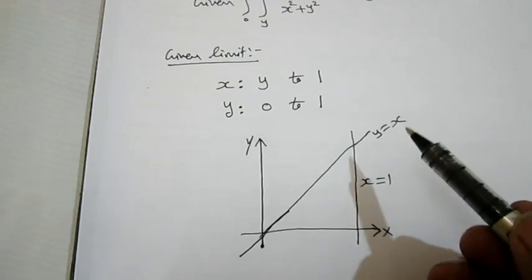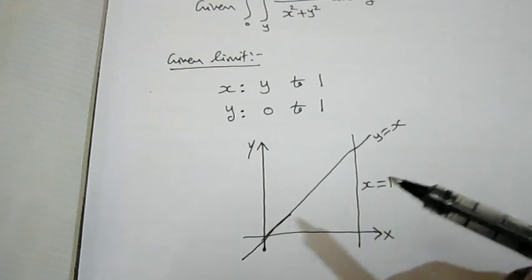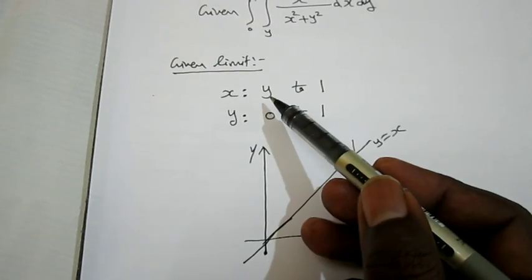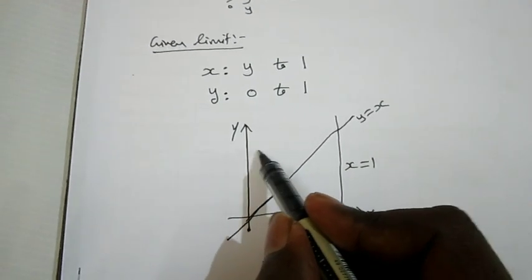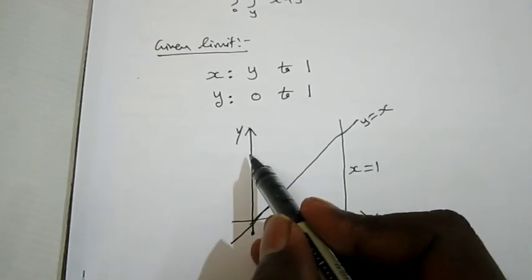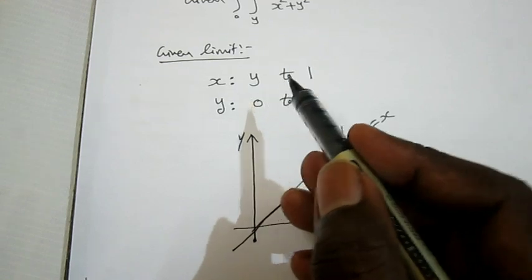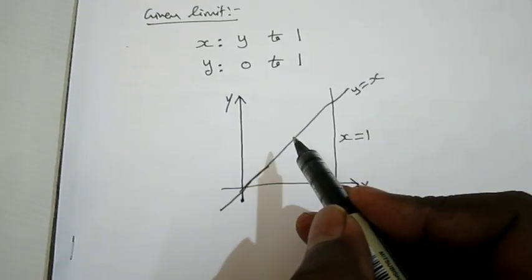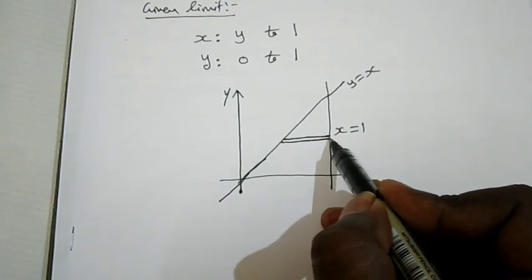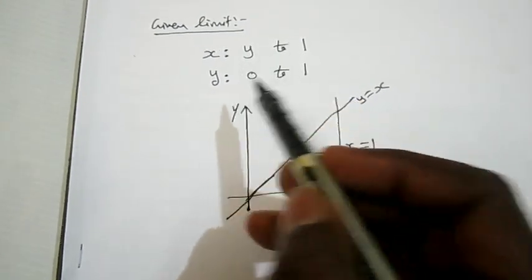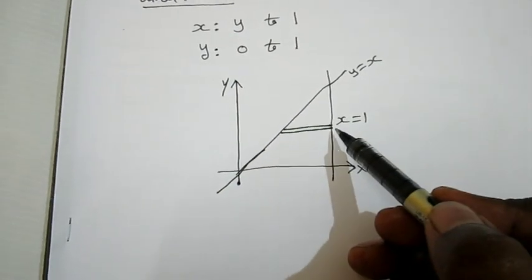Now I am going to draw the strip. Since x has the variable limit, I am going to draw a horizontal strip. This horizontal strip must start from the equation y and end with x equal to 1. Here the horizontal strip must start from the equation, so the horizontal strip starts from the equation and ends with 1.